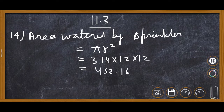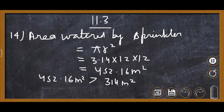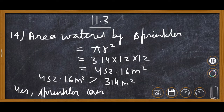When we multiply 3.14 into 12 into 12, the answer is 452.16 meter square. The area of the flower garden is 314 meter square. Since 452.16 meter square is greater than the area of the flower garden, the answer is yes — the sprinkler can water the entire garden.